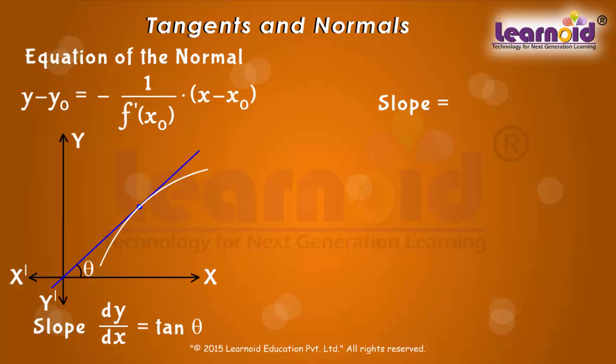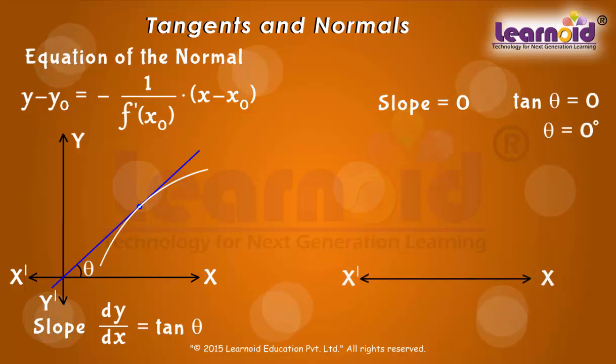If the slope of tangent is 0, tan θ = 0 which means tangent line is parallel to x-axis. The equation of tangent is given by y = y₀.